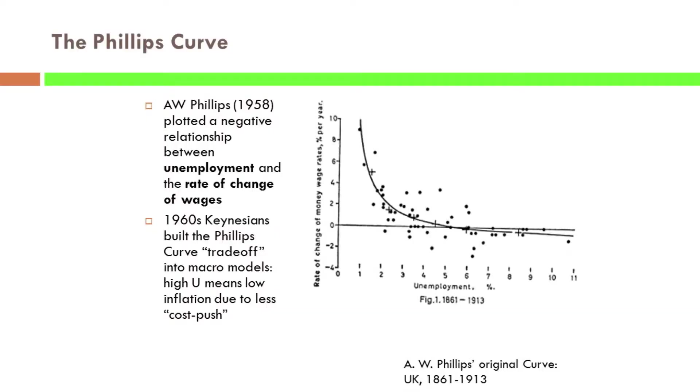One of the keystones — something that became a keystone of Keynesian economics — is not in the general theory. Because there isn't a theory of the price level in the general theory, something gets incorporated into Keynesian forecasting models, and it's still there — it was still there in the Romer-Bernstein estimates I made fun of last time — and that is the Phillips curve.